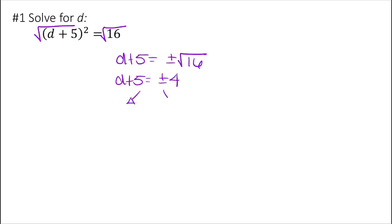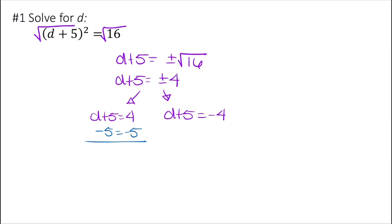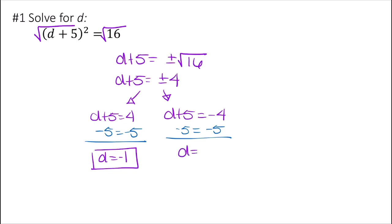I can now separate this into two equations: d plus 5 equals 4, and d plus 5 equals negative 4. Solving by subtracting 5 from both sides gives me d equals 4 minus 5, which is negative 1 on the left, and d equals negative 9 on the right. So those are my two solutions.